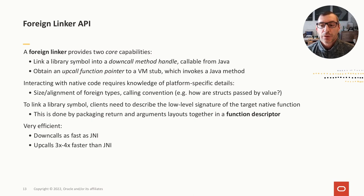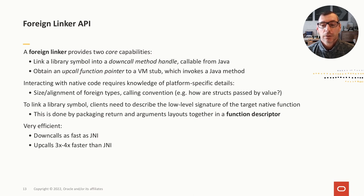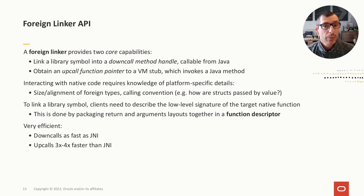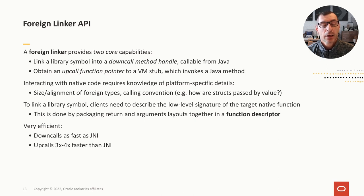We use the term calling conventions to describe the set of platform-specific rules that native calls must follow. To link a foreign function into a method handle, the Foreign Linker API needs a description of the function's signature so the correct machine code can be generated. This is done by packaging memory layouts for arguments and return values into a new abstraction called a function descriptor. The support is very efficient: for downcalls — Java to native — the Foreign Linker API is as fast as JNI, while for upcalls — native back to Java — it is three to four times faster than JNI.